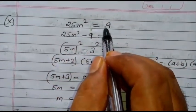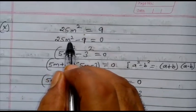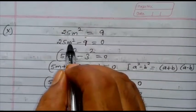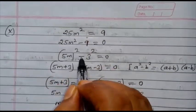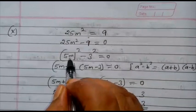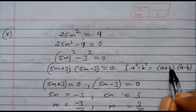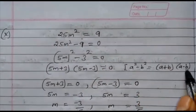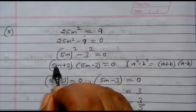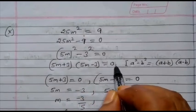Next problem: 25m² equals 9. Take 9 to the left-hand side: 25m² minus 9 equals 0. Now, 25 is the square of 5, so write (5m)² minus 3² equals 0. This is in the form a² minus b², so write (a plus b)(a minus b) equals 0, where a is 5m and b is 3. So: (5m plus 3)(5m minus 3) equals 0.